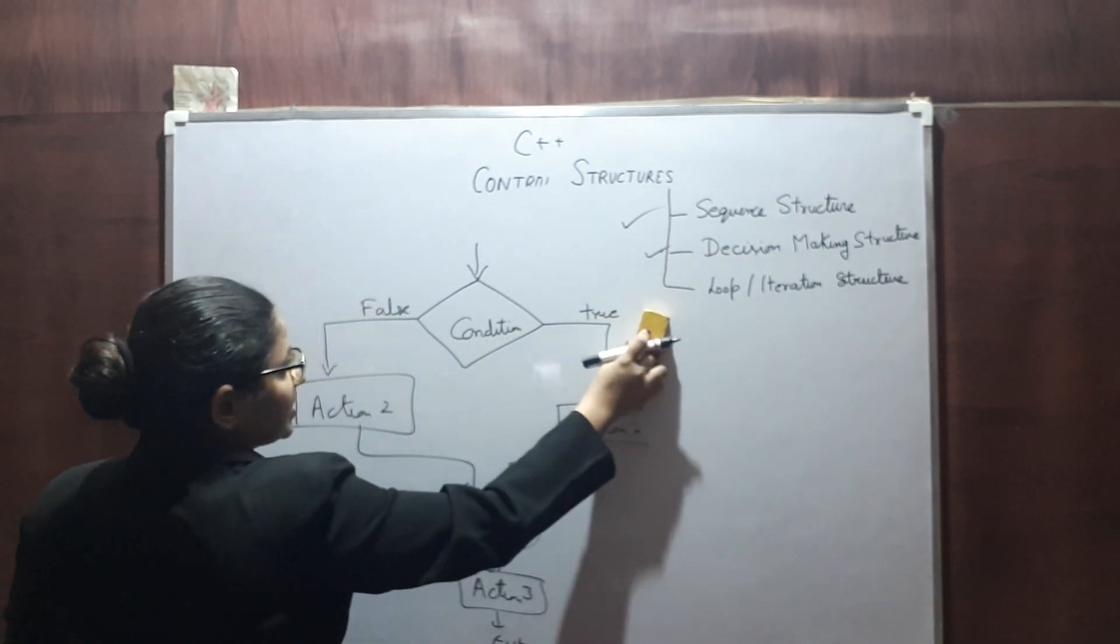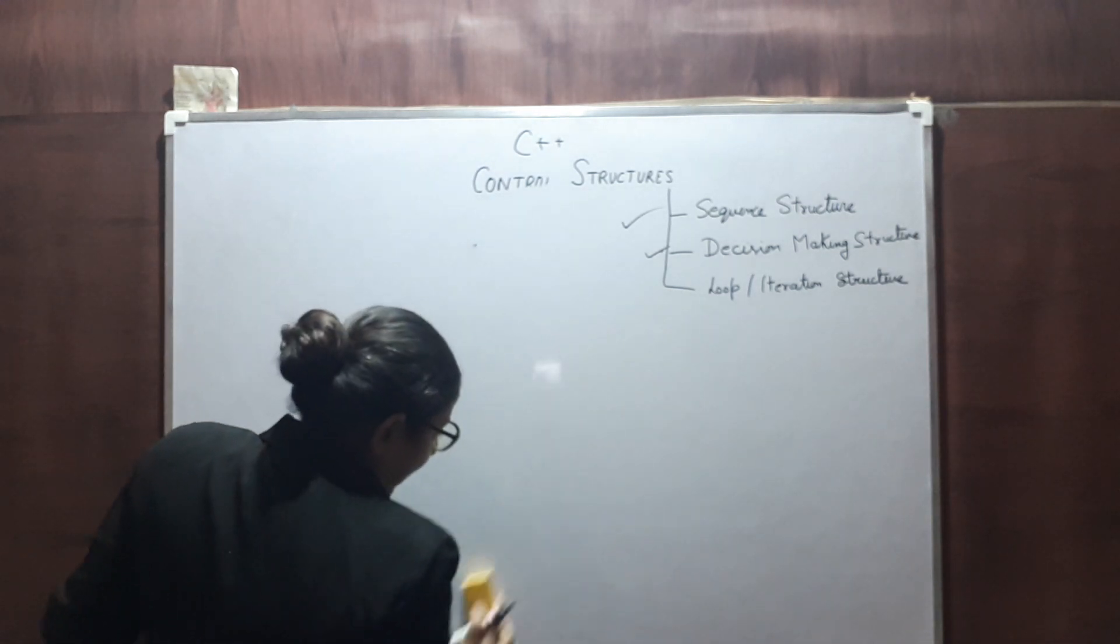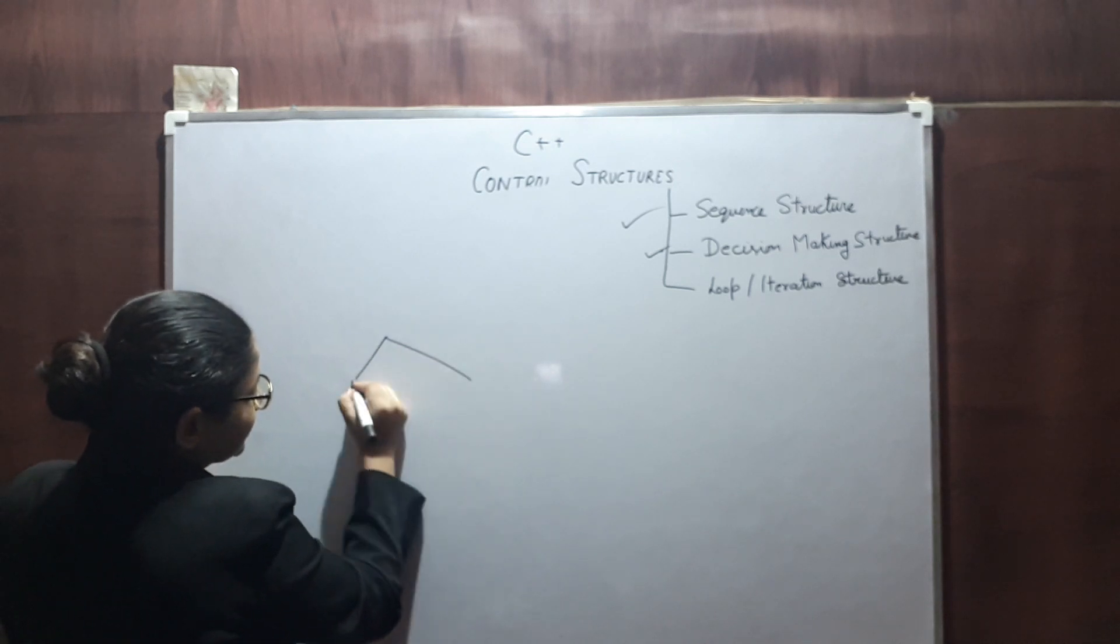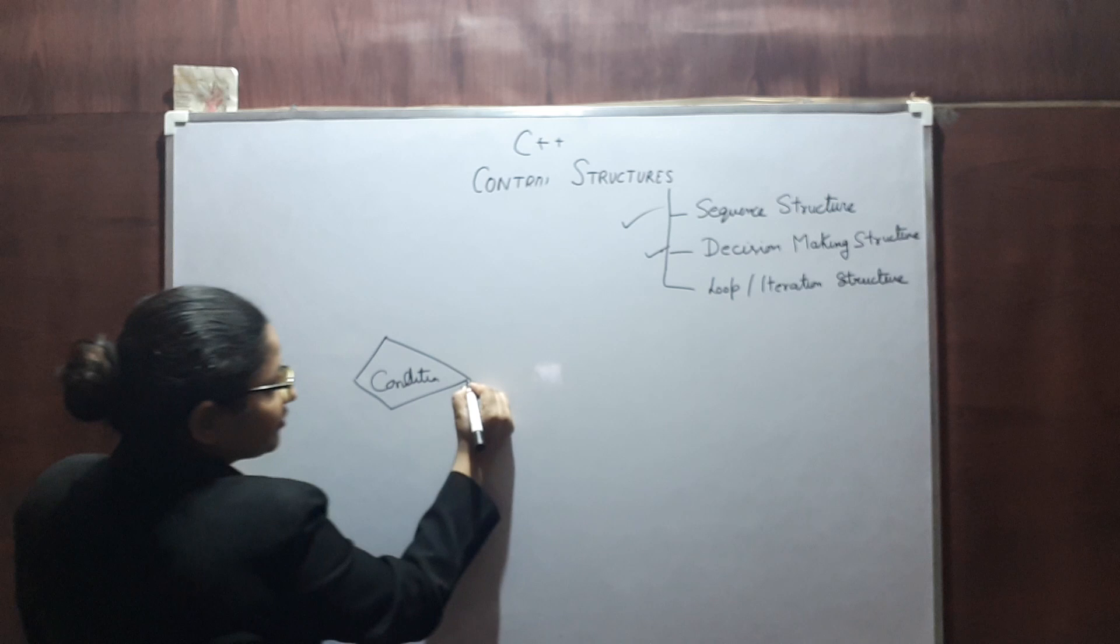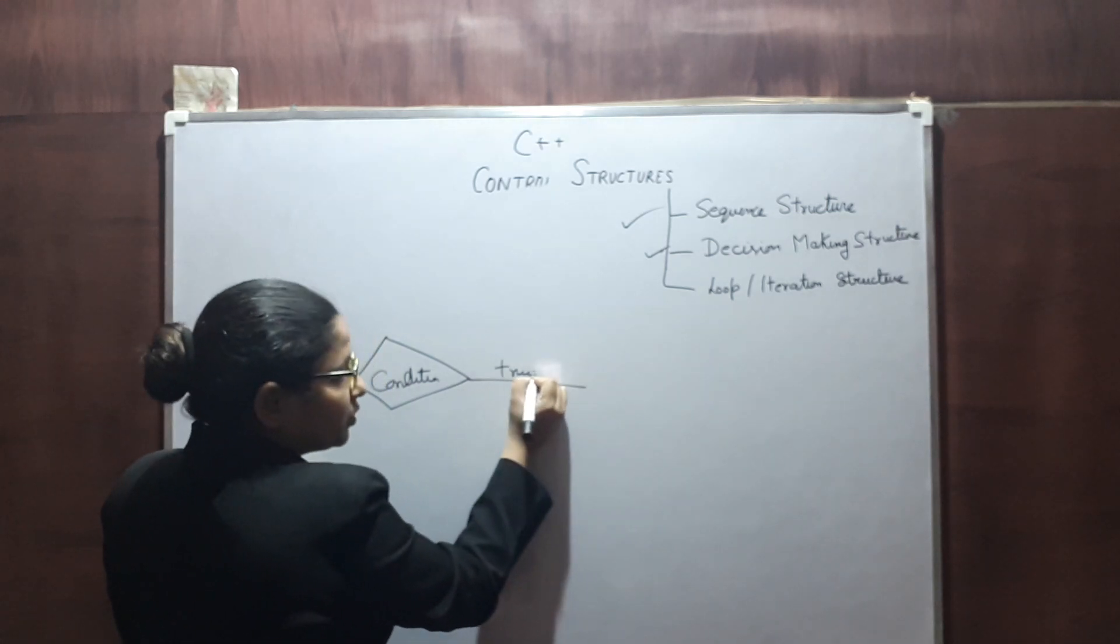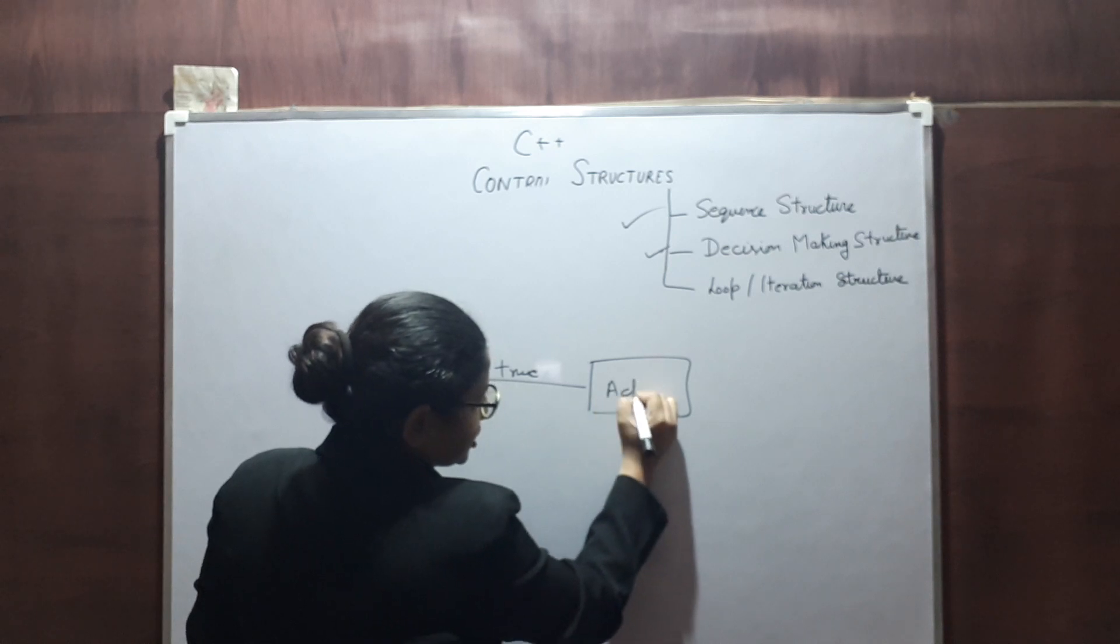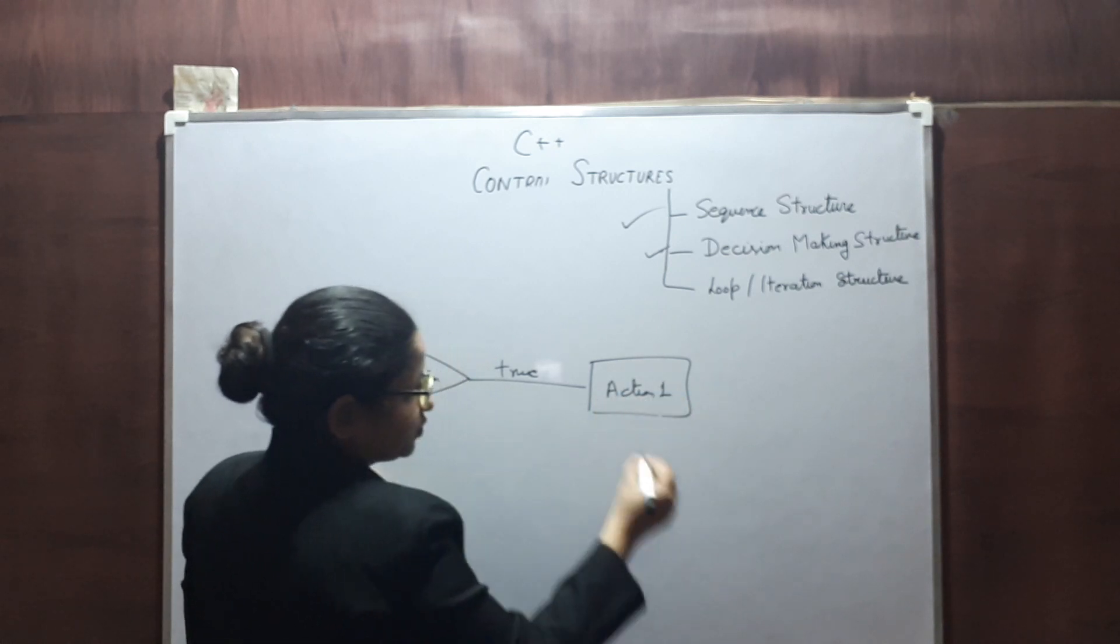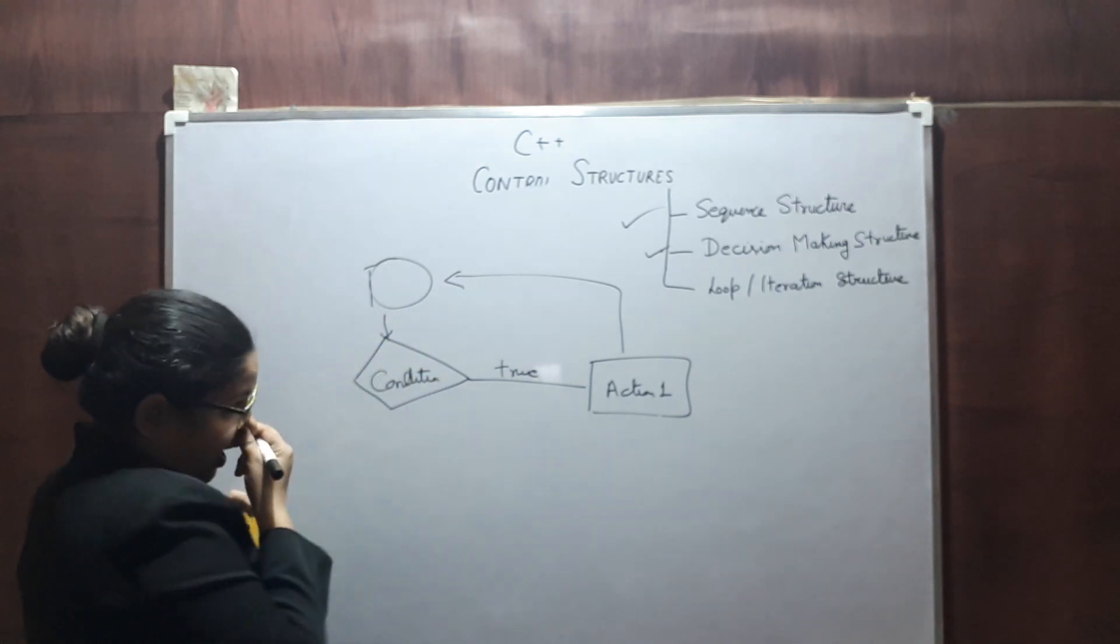The next is loop or iteration structure. Again, here what we do. We have Condition 1. If condition is evaluated to true, then we perform some Action 1.